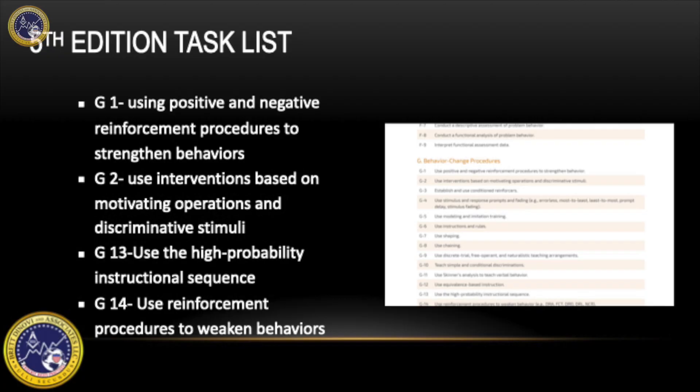Items from the fifth edition task list that I will cover are G1, using positive and negative reinforcement procedures to strengthen behaviors; G2, use interventions based on motivating operations and discriminative stimuli; G13, use the high probability instructional sequence; and G14, use reinforcement procedures to weaken behaviors.